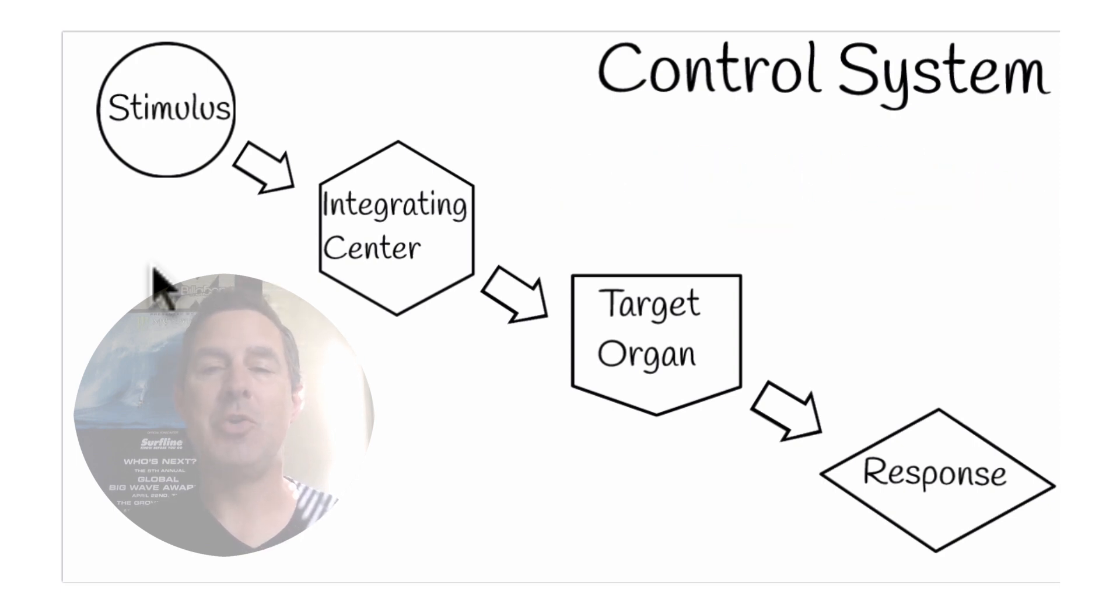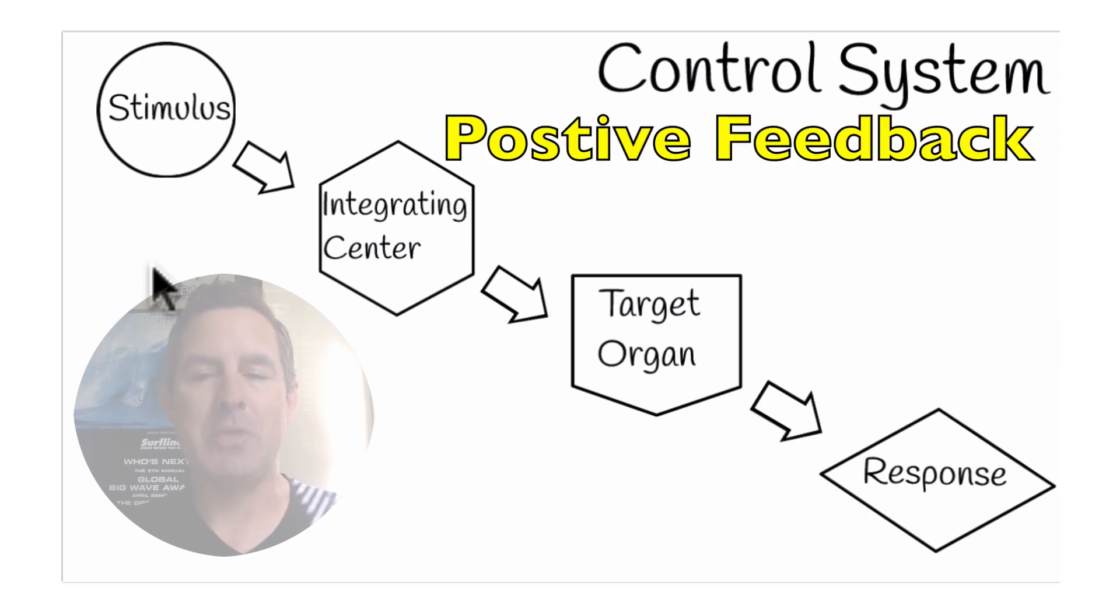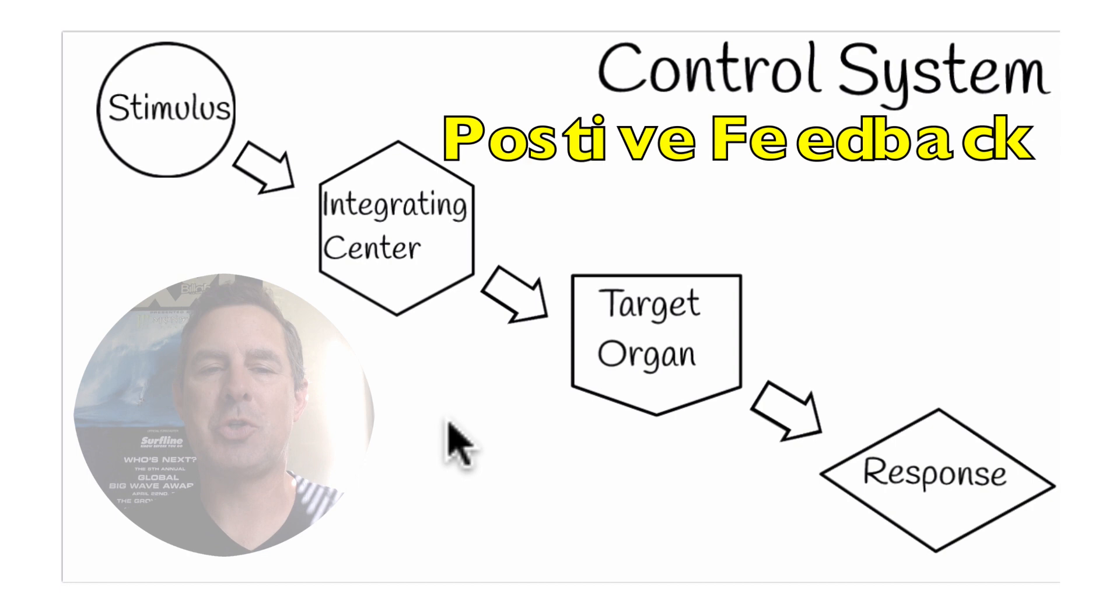We also have a process known as positive feedback. Positive feedback can be a good thing, it can be necessary and is necessary in certain times and states of our body, but it does not maintain homeostasis. Now one could argue certainly that in the overall scheme of things it maintains lifelong homeostasis if you will, but the way we're describing this control system, positive feedback does not maintain homeostasis.